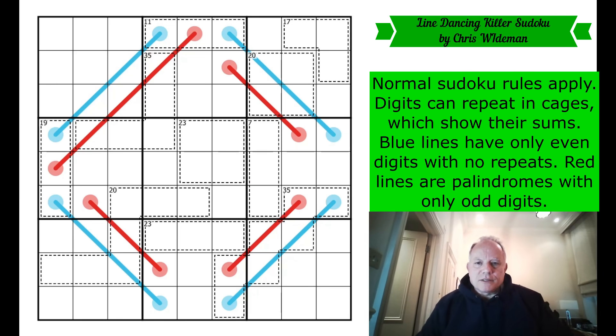Now, what is going on in this puzzle? It's called Line Dancing Killer Sudoku, which is great. That thumbnail writes itself. It's by Chris Weidman, who I think it's his debut on the channel. And it features normal Sudoku rules, all well and good, but not normal killer rules. Because although cages show their sums, digits can repeat in them. So this 35 cage, I would normally have the power of knowing that had to be made up of 9-8-7-6-5, but it can include repeats this time.